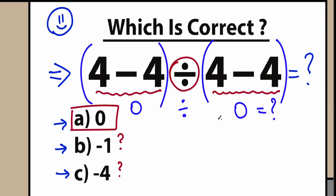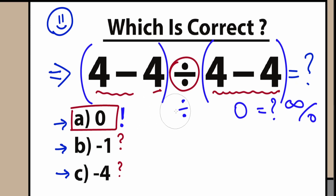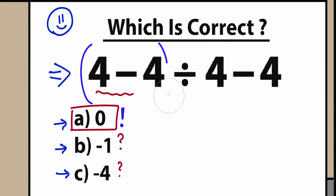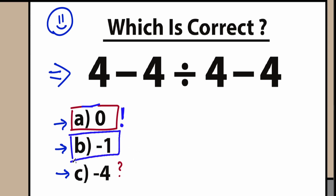We don't know the answer when dividing by 0 — it could be infinity, 0, or undefined. So if you add parentheses to the question, you could solve it that way. But in our case, we don't have parentheses. Forget about 0 as an answer — it is absolutely wrong. The correct answer is minus one, because we solved it according to the correct order of operations.